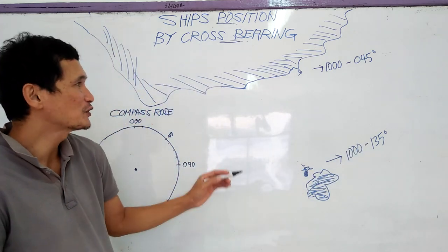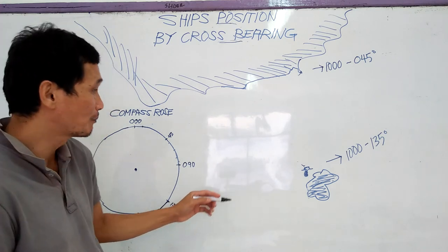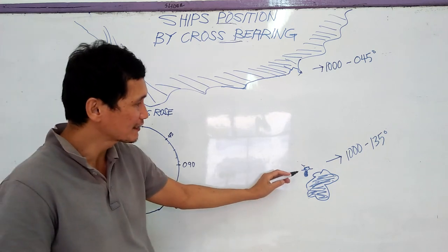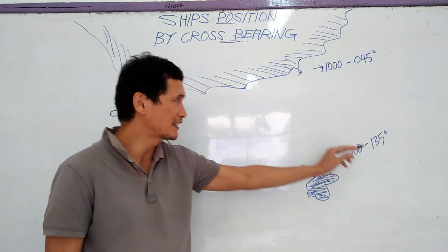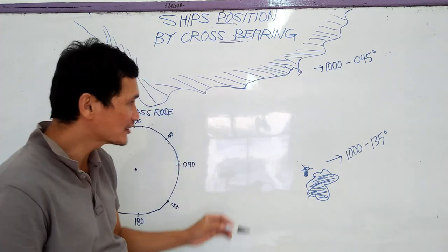Same also in your magnetic compass. If you see your magnetic compass, you see this at 1000 hours, 135 degrees, simultaneously at 0800 hours.